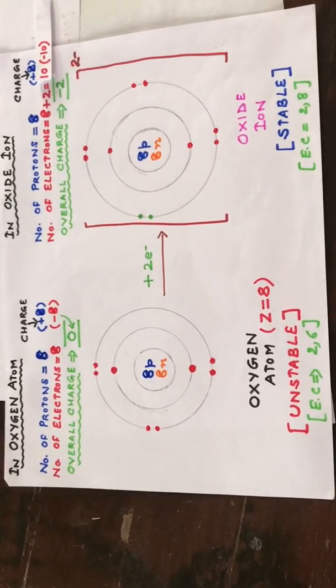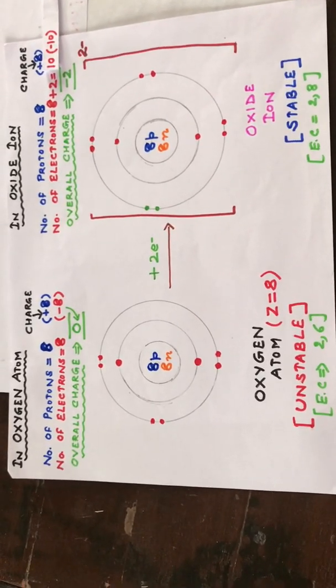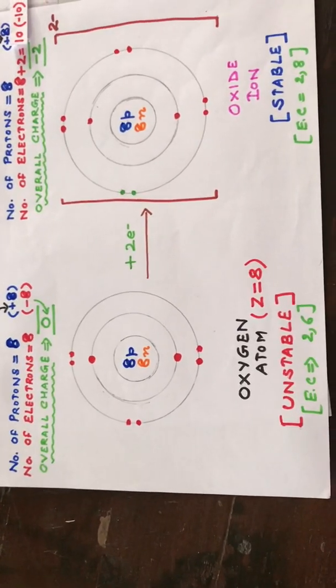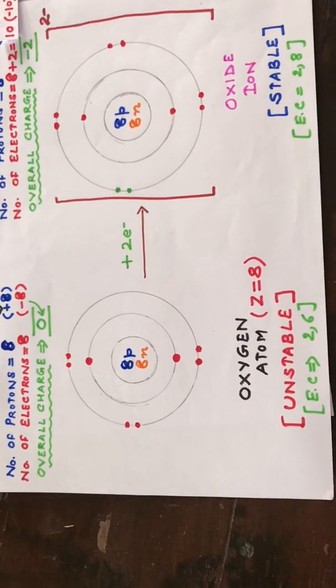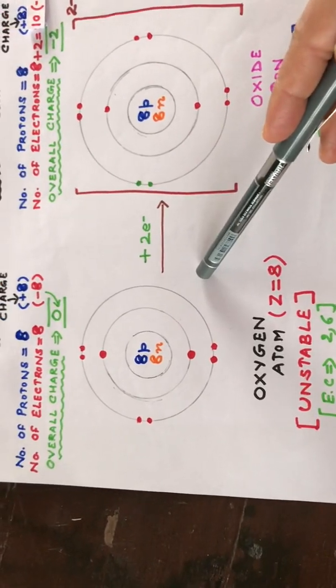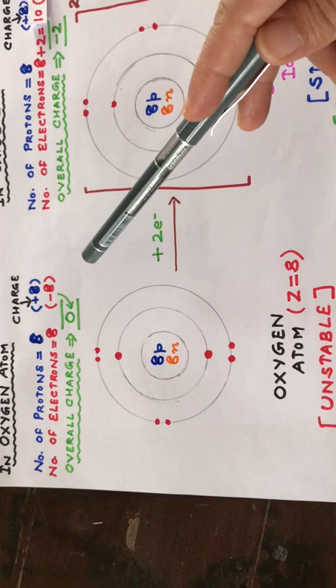Let us try to understand the formation of oxide ion. Before we do so, let us try to know what exactly is in an oxygen atom because of which it forms its ion. Oxygen is a chemically unstable atom and electrically neutral.